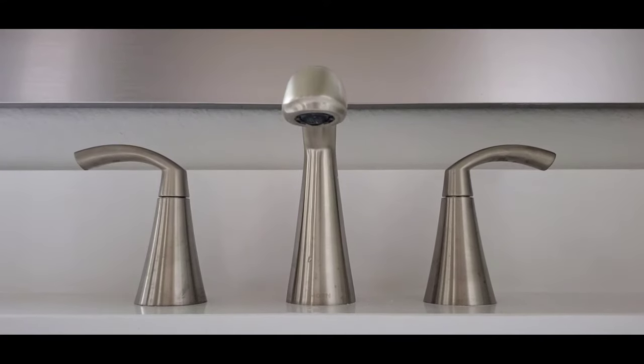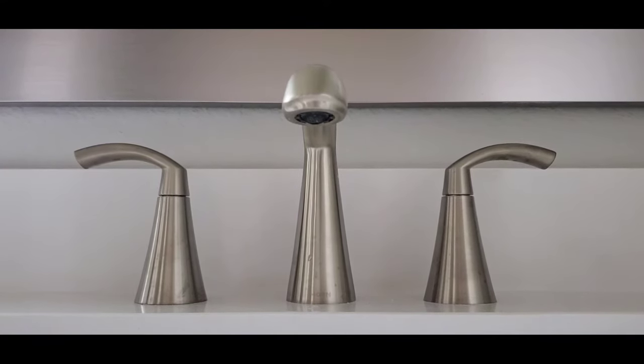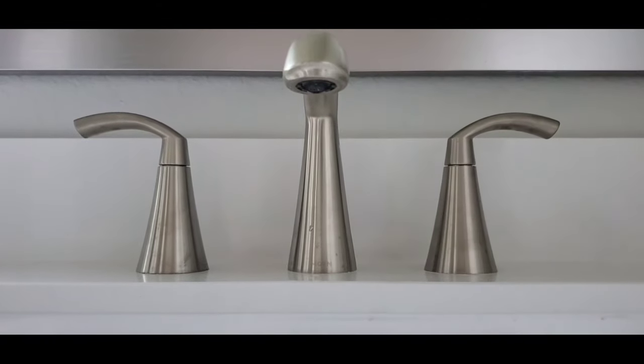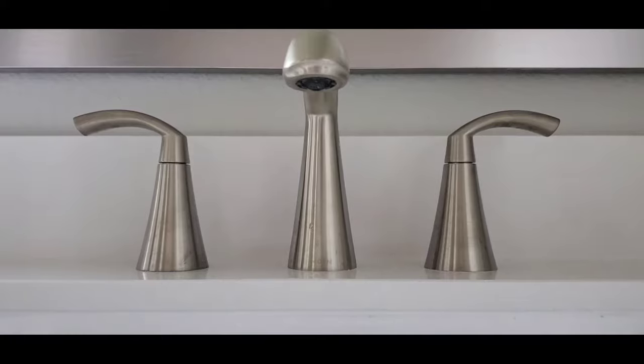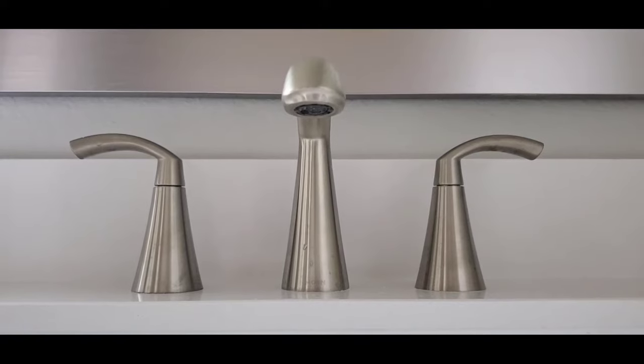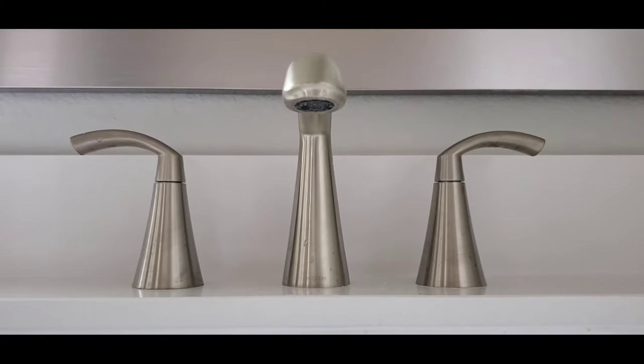Hello everyone, this is Justin with Green Residential. Today I'd like to show you how to replace a hidden aerator on a faucet. This is a bathroom sink faucet, and as you can see, it has a hidden aerator in there. To remove this, you're going to need a special key.